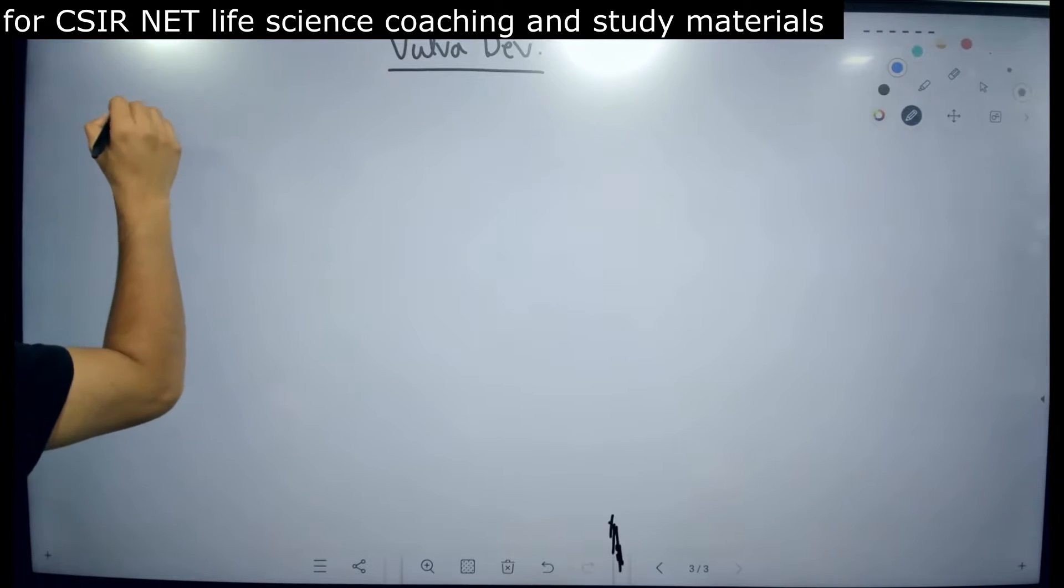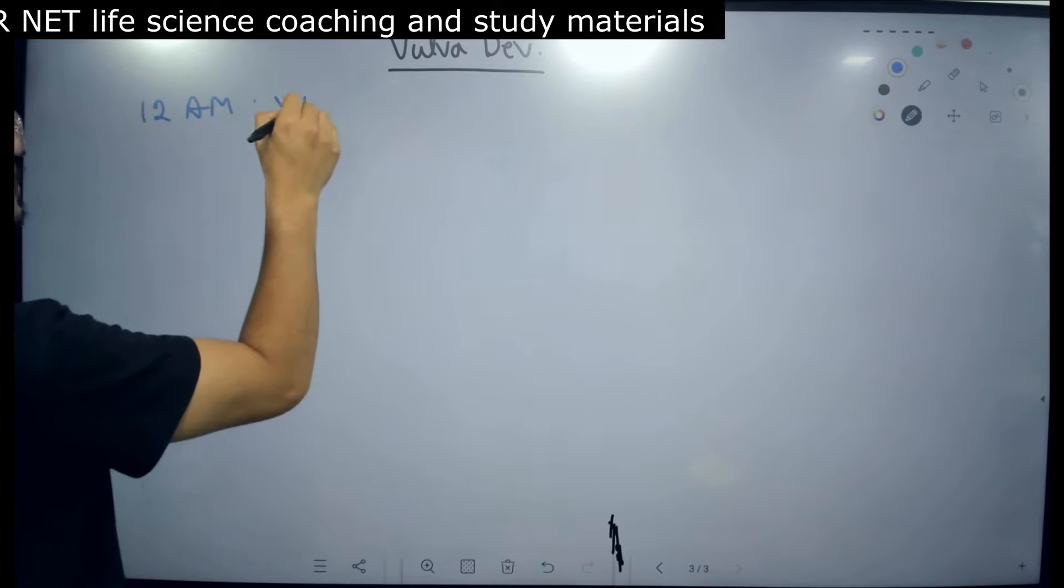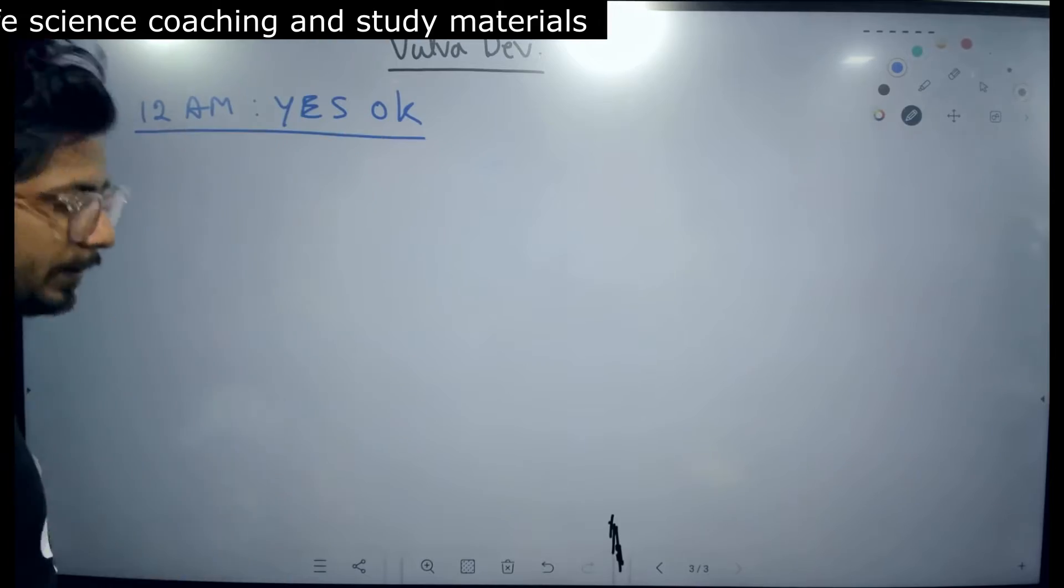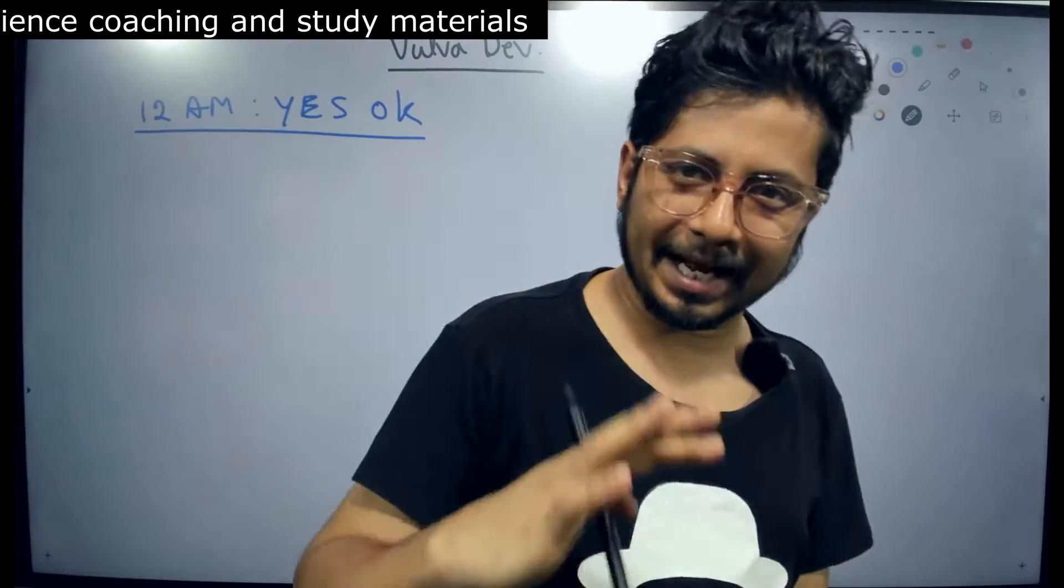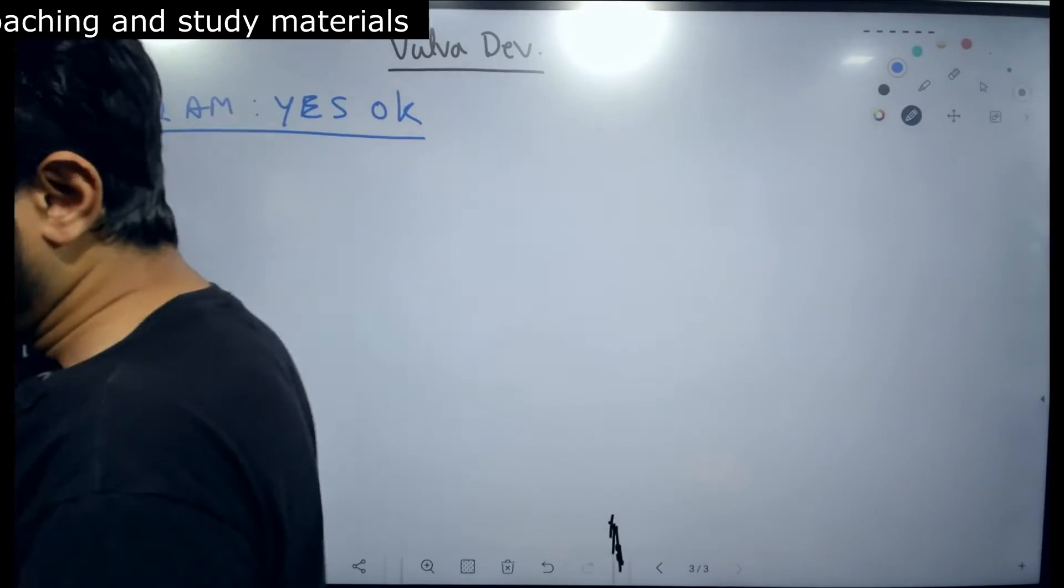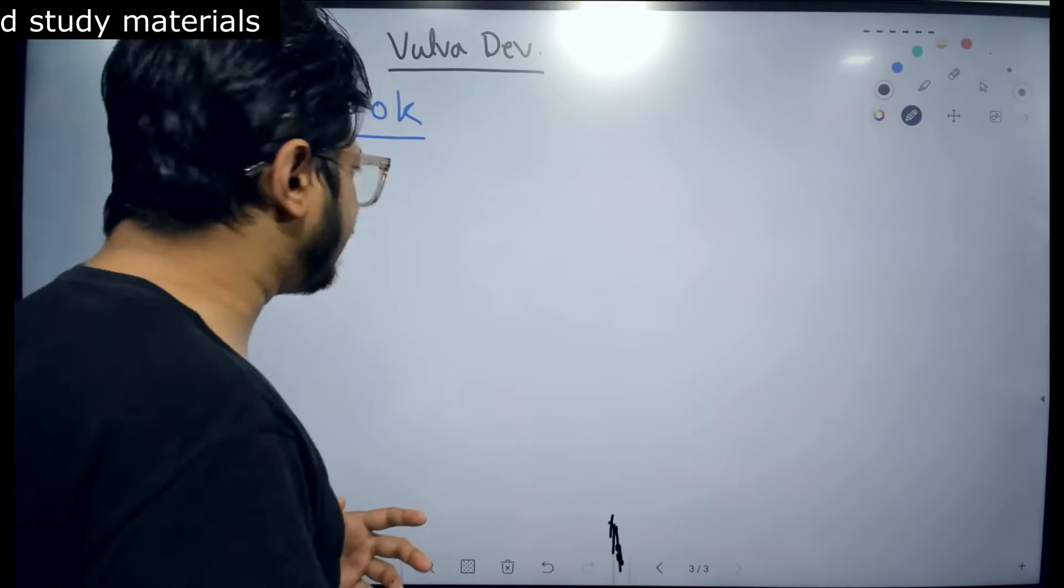The mnemonic is 12am YES OK. This is all you need to remember. 12am, midnight. Yes. Now, if you remember this small mnemonic, you can correlate the steps of vulva development quite easily.